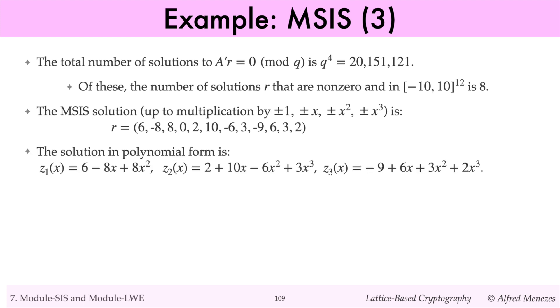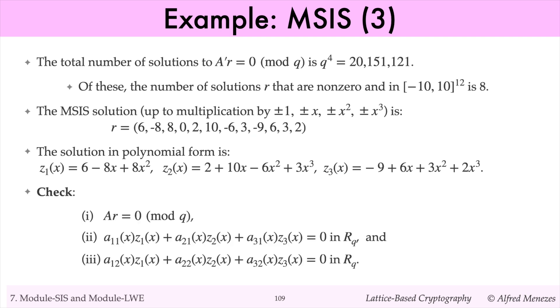The polynomial form solution is z1, z2, z3. You can check that A times R is 0 modulo q, and also that z1, z2, and z3 satisfy the two polynomial equations.